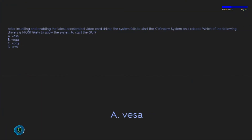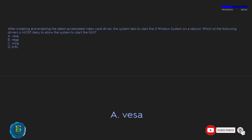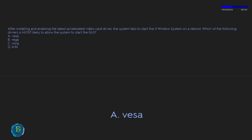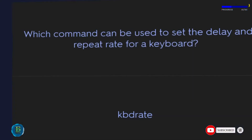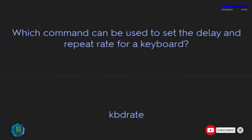After installing and enabling the latest accelerated video card driver, the system fails to start the X Window System on reboot. Which driver is most likely to allow the system to start the GUI? The answer is B: VESA. Which command can be used to set the delay and repeat rate for a keyboard? The answer is kbdrate.